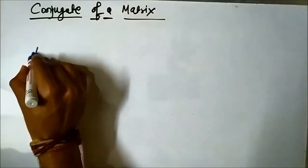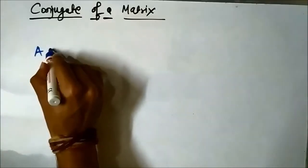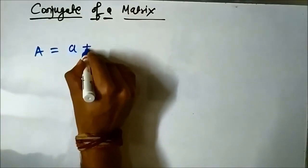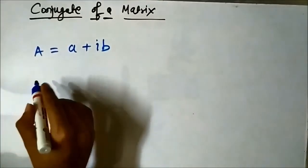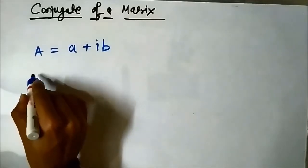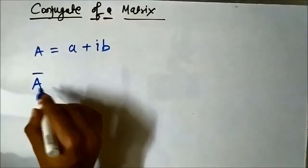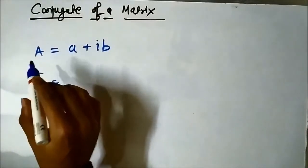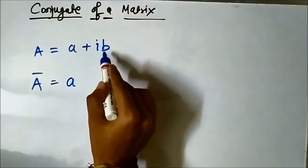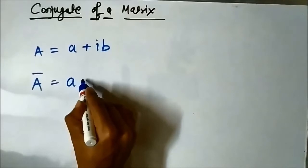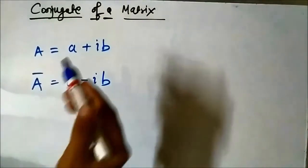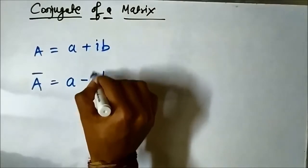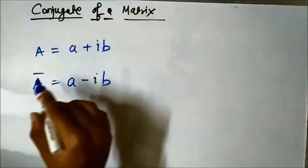Let us say we have a complex number a + ib. The conjugate of complex number a is represented by a bar symbol — a conjugate. In the conjugate of a complex number, the real part stays as it is. The imaginary part is multiplied with minus 1, so it becomes a - ib. Only the number associated with i becomes negative.